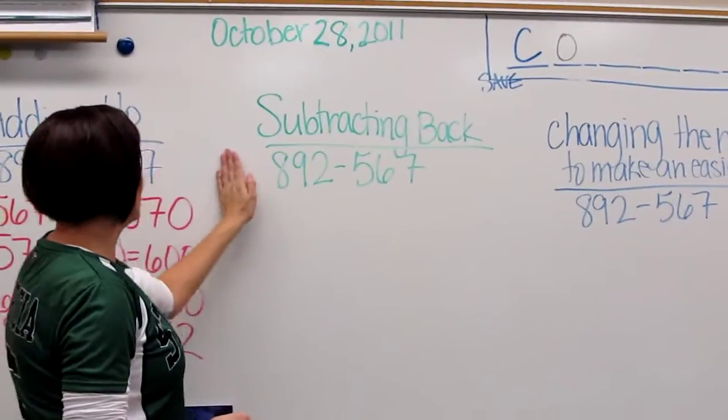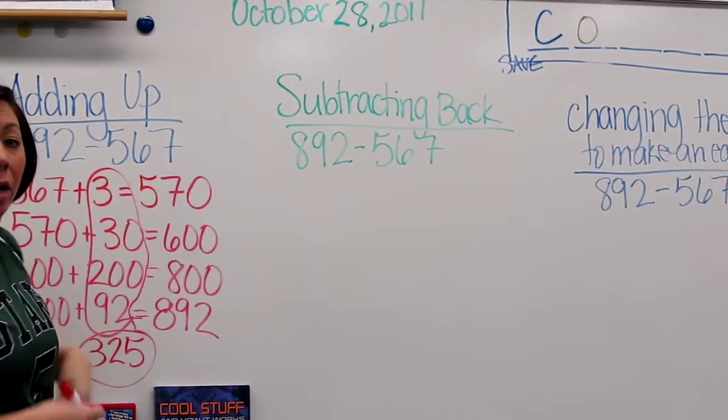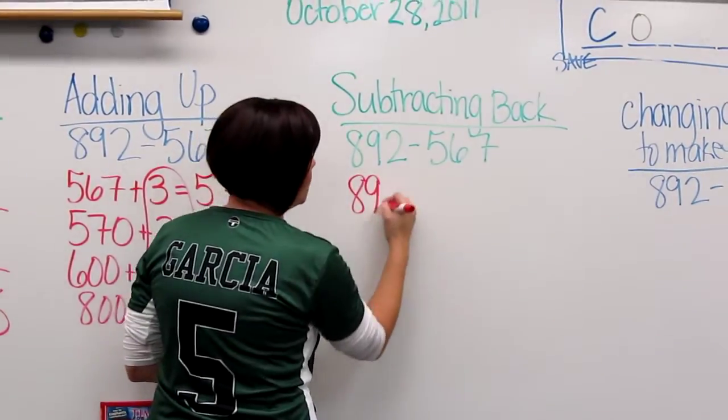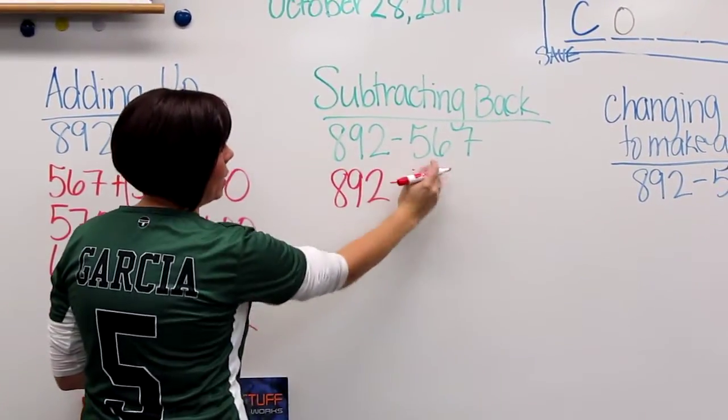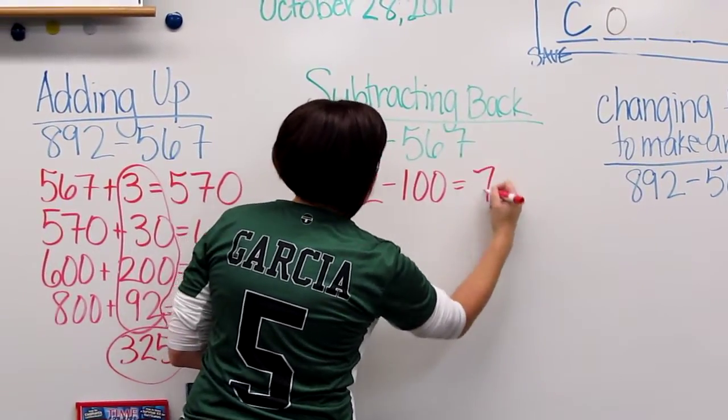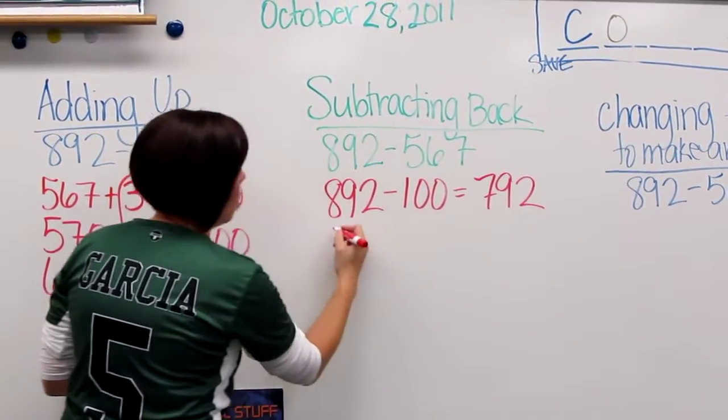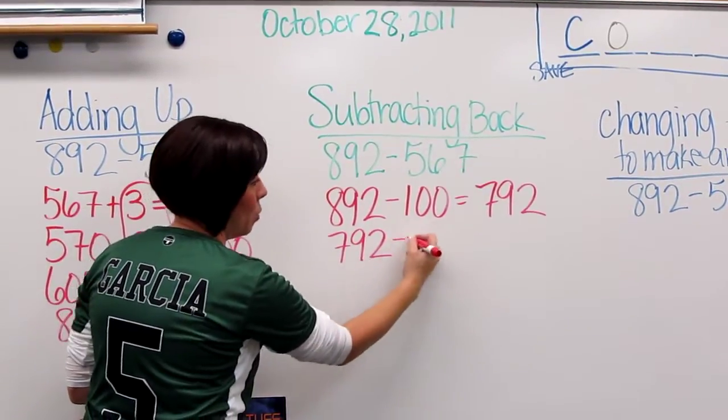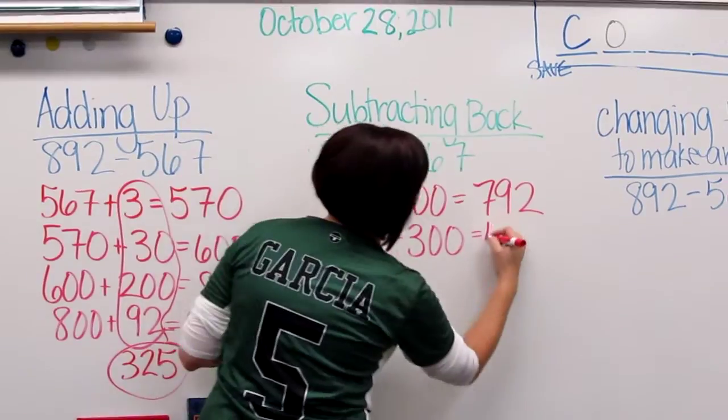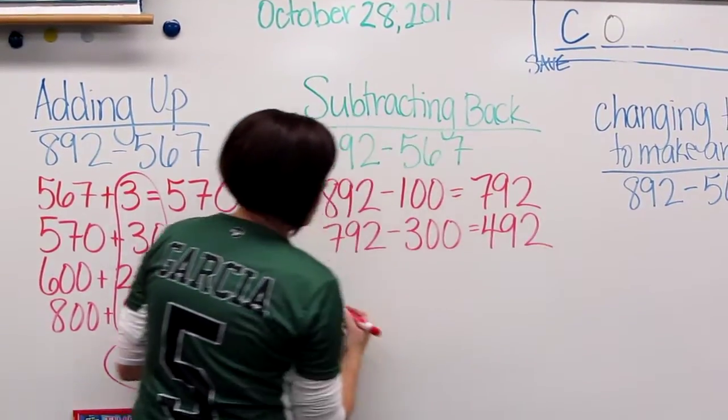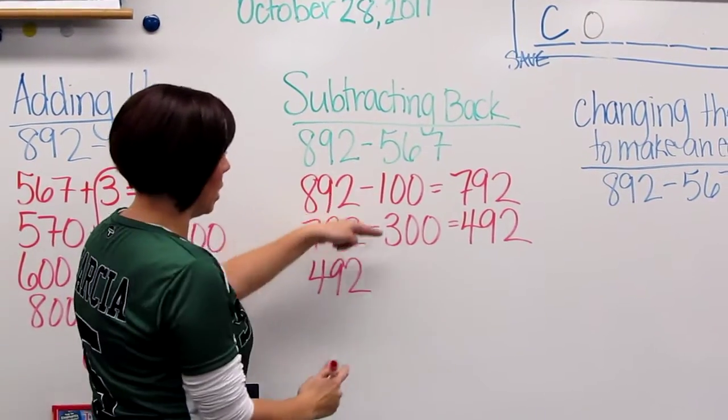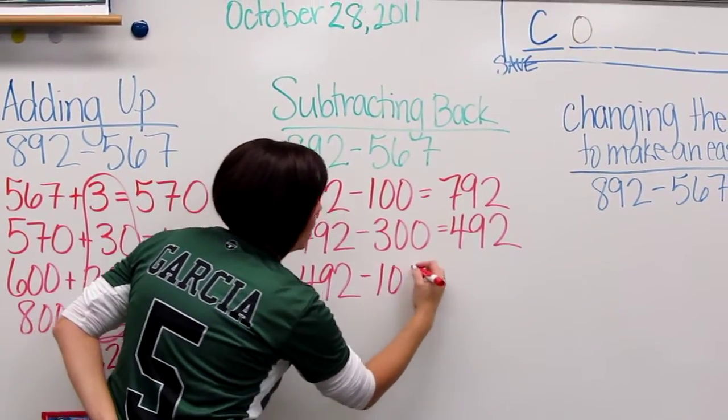Subtracting back is very similar to subtracting in parts, but it breaks it down just a little bit more. 892. We start with 892 and then we'll subtract 100 at a time. Now some kids might even go, okay, I can subtract a little bit more. They might go, okay, that time I can subtract 300. And then so far they've subtracted 400 total here. And so they know I need another 100.